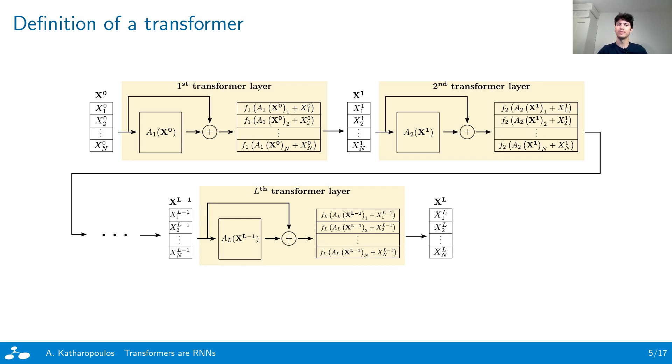Those transformer layers, in turn, consist of an attention function and a transformation function. The attention, marked with red, is the only component that acts on the entire input sequence. Instead, the transformation function, marked with green, acts on each element of the sequence separately and is usually implemented with a two-layer MLP.